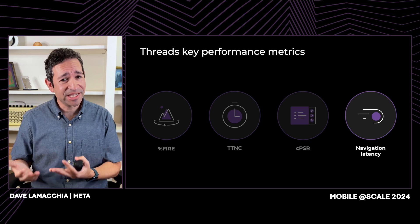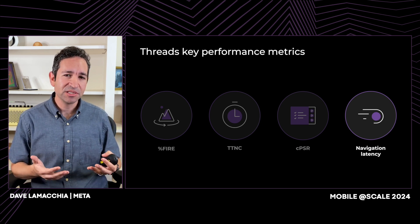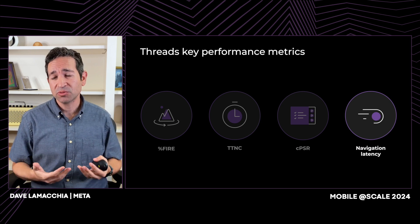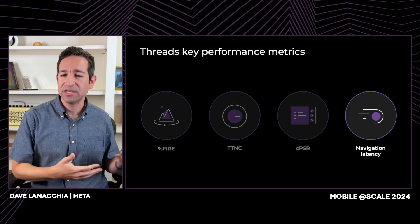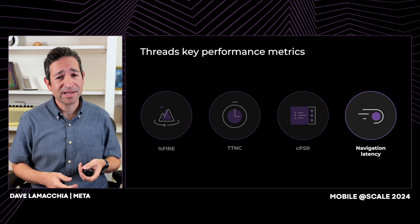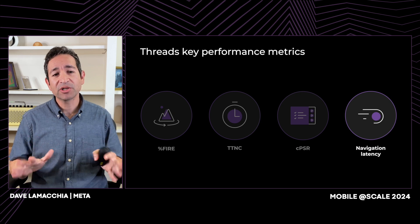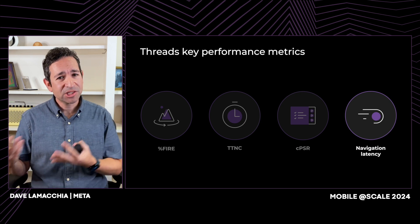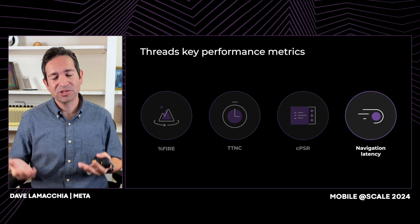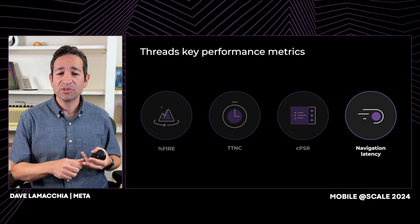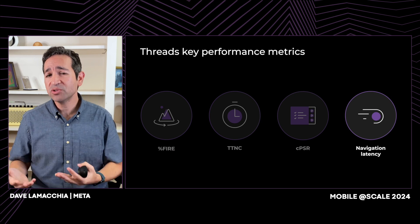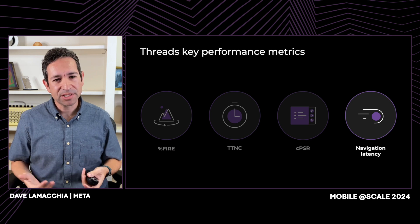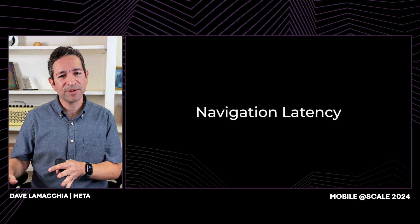Navigation latency measures how fast the app is to use, both navigating from one area to another and launching — whether from a cold start where the app is not resident in memory, or a warm start where it is. Today I'm going to go into depth on two of these areas: navigation latency and publish reliability. Navigation latency because if the app doesn't launch fast, people just aren't going to use it, and publish reliability because if people can't post reliably, there won't be content for others to read.